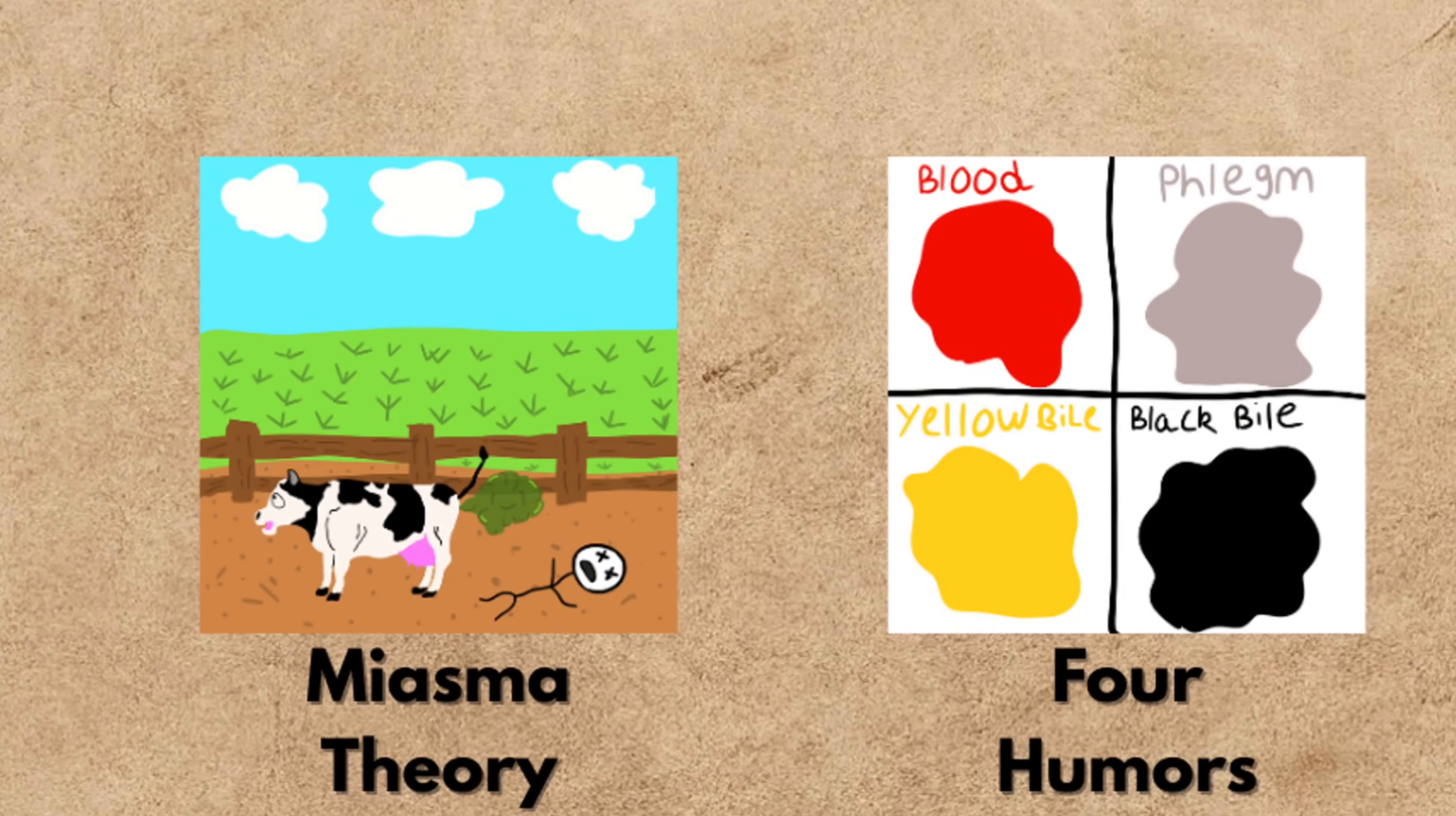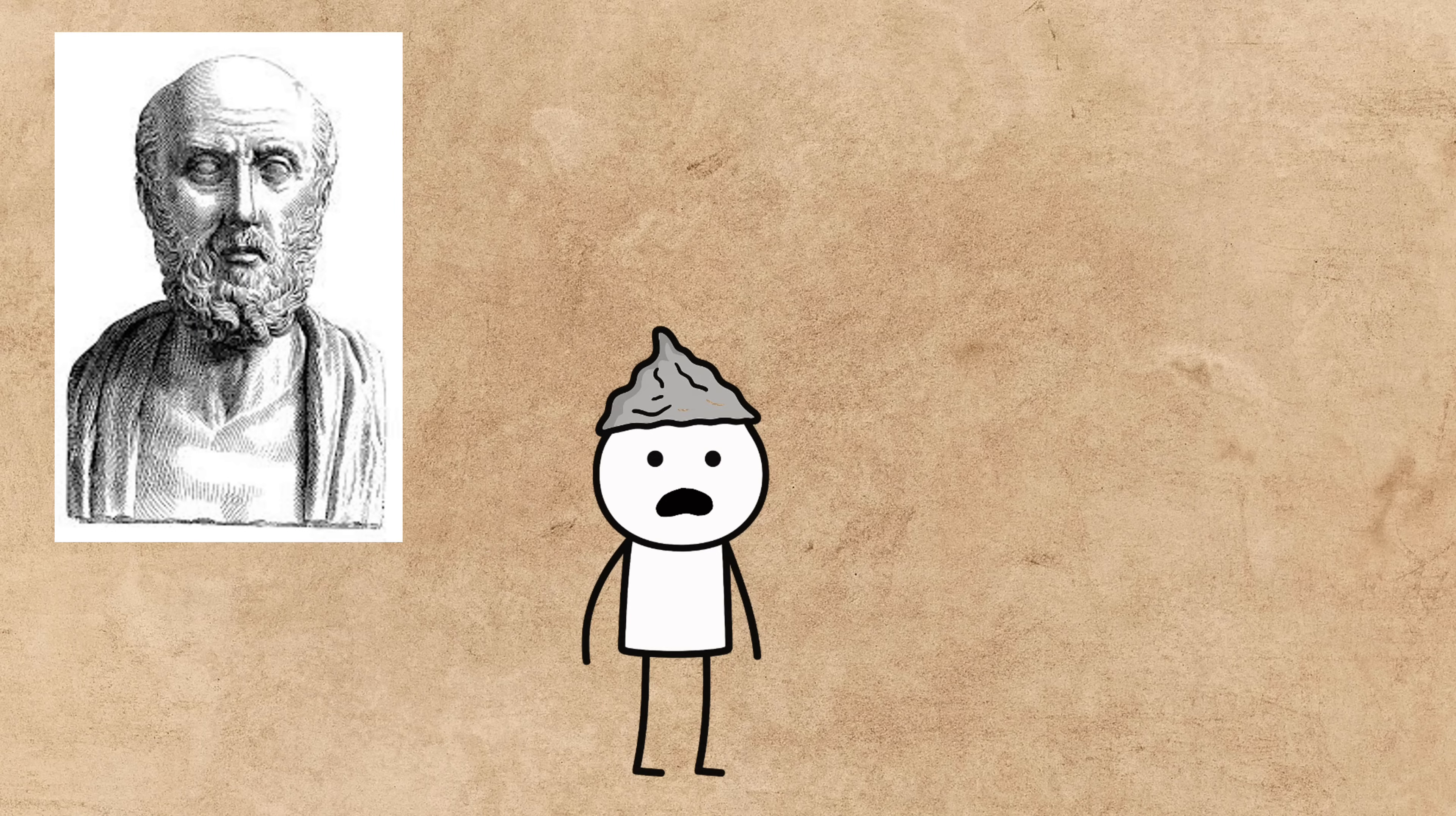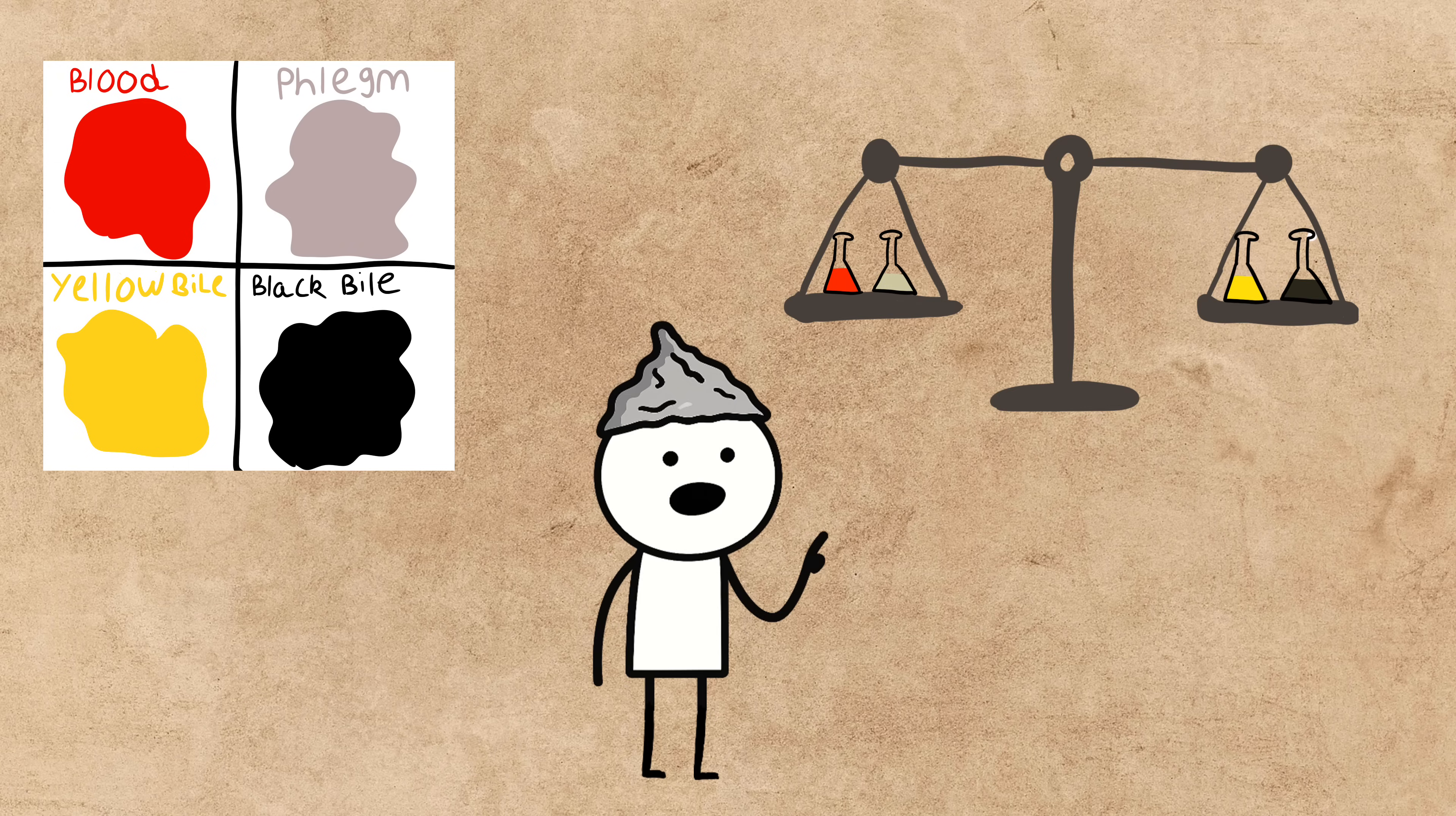At number six is a theory that ran Western medicine for over 2,000 years: Humorism, or the theory of the four humors. Put forth by ancient Greek physicians like Hippocrates, and later championed by the Roman physician Galen, this theory said the human body was filled with four basic liquids, or humors: blood, phlegm, yellow bile, and black bile. Your health, and even your personality, was all about the balance of these four fluids.